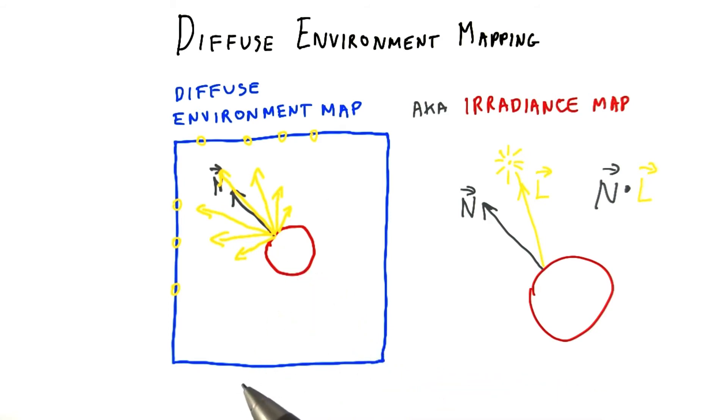You might think doing this is a bit expensive to do for every pixel we want to illuminate, and you'd be right. Doing this properly is a good task for path tracing. However, there are a few things working in our favor.